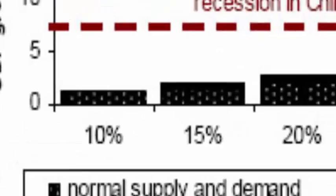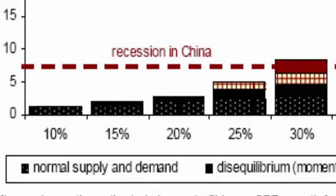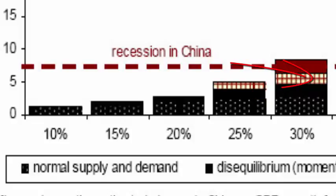That continues until roughly a 20-25% change in property prices in a very short term. If we see that change in property prices, we would also expect to see a certain amount of disequilibrium in Chinese property markets, and we would even see already underlying structures changing.